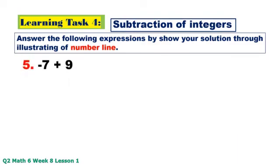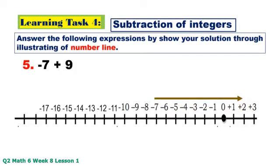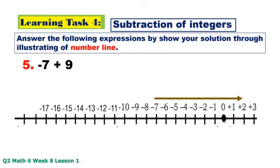Number 5: negative 7 plus positive 9 — counting 9 units to the right: 1, 2, 3, 4, 5, 6, 7, 8, 9. The answer is positive 2.